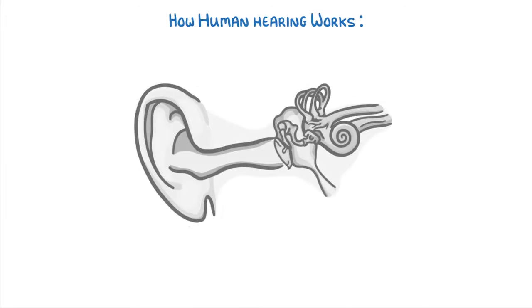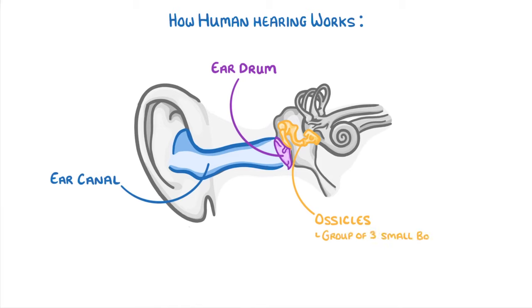The last thing we need to cover is how human hearing works. In this picture here, we can see the entire ear. The important parts to be aware of are the ear canal, the eardrum, the ossicles, which are a group of three small bones, the semicircular canals, the cochlea, and finally the auditory nerve.